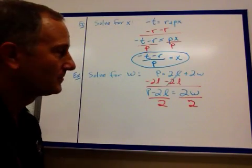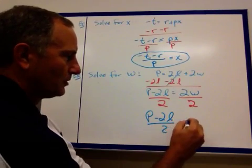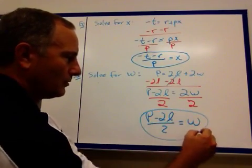The 2's cancel out on the right. We're left with p minus 2l all over 2 equals w.